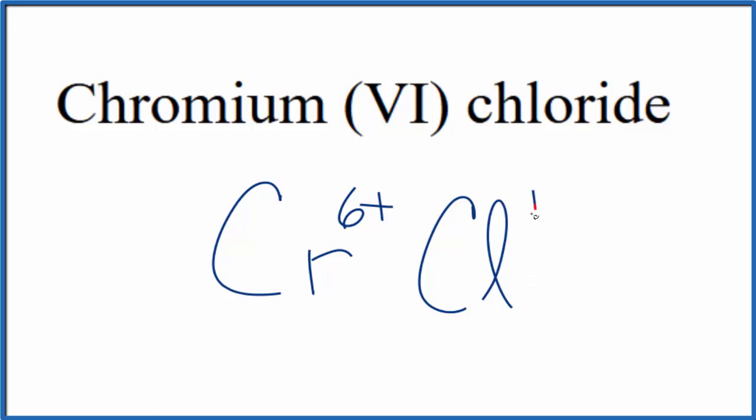It forms ions that are 1 minus. Since chromium 6 chloride here is neutral, it doesn't say ion after it, these charges need to add up to zero. We need a net charge of zero.